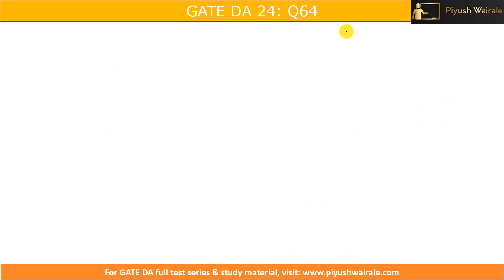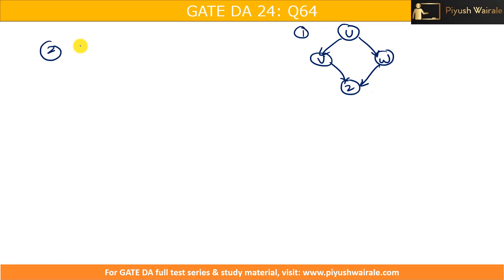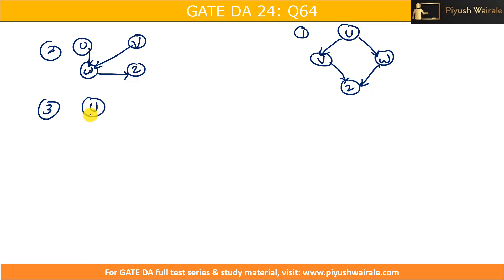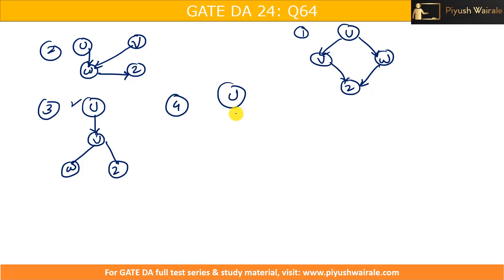Instead of the given diagram, they might present a linear chain: U → V → W → Z, where each node is dependent only on the previous one. Another possible structure could have U and V both pointing to W, then W to Z. Various network topologies are possible — they can arrange the arrows differently among U, V, W, Z.